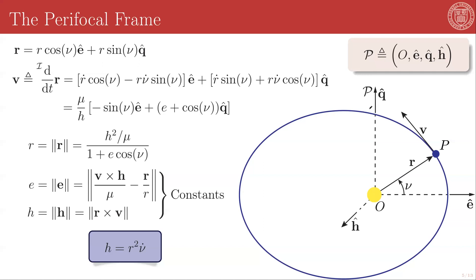We can then write the position of one body with respect to the other — that is the radius r_p relative to o — in components of this parafocal frame. Because all of the motion takes place within the EQ plane, which we call the parafocal plane, we only have components in those two directions. We will use polar coordinates: r, the scalar magnitude of the vector r, and nu, the angle between r and the eccentricity vector direction.